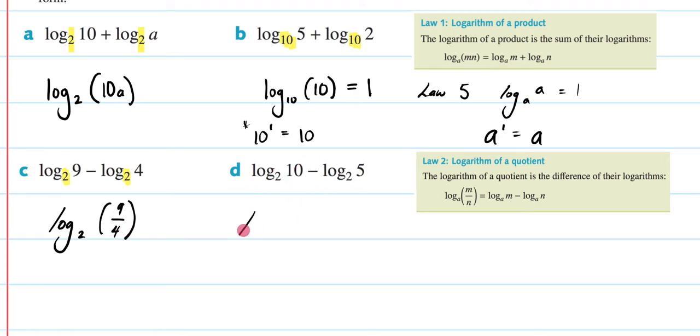Next, we're going to do the same thing. We have the same base again. So log of 2. And now we're going to have 10 over 5. Now 10 over 5, that's the same thing as log₂(2). 10 divided by 5 is 2. Now, as you can see, we're in the same situation as we were back here. Both my base and my argument are the same. And we know according to log law 5, that's going to mean that my answer is going to be 1. So for D, my answer is going to be 1.